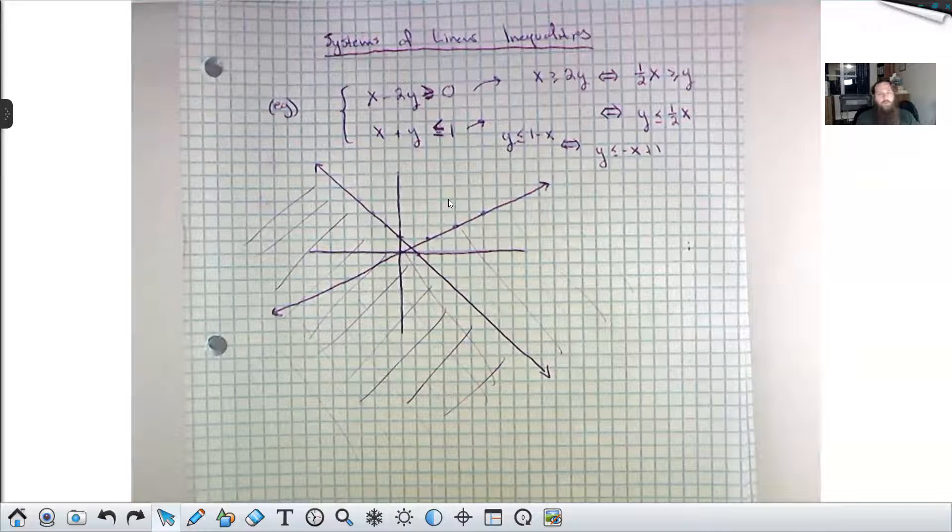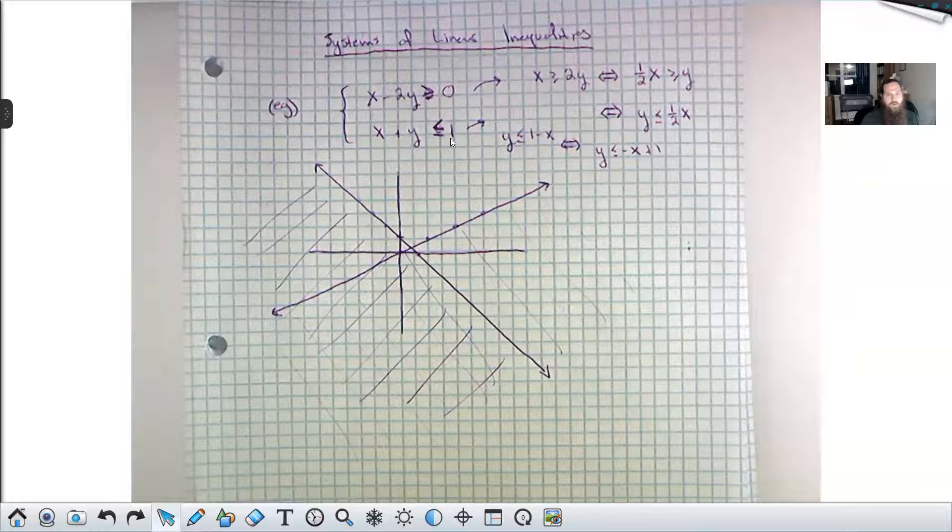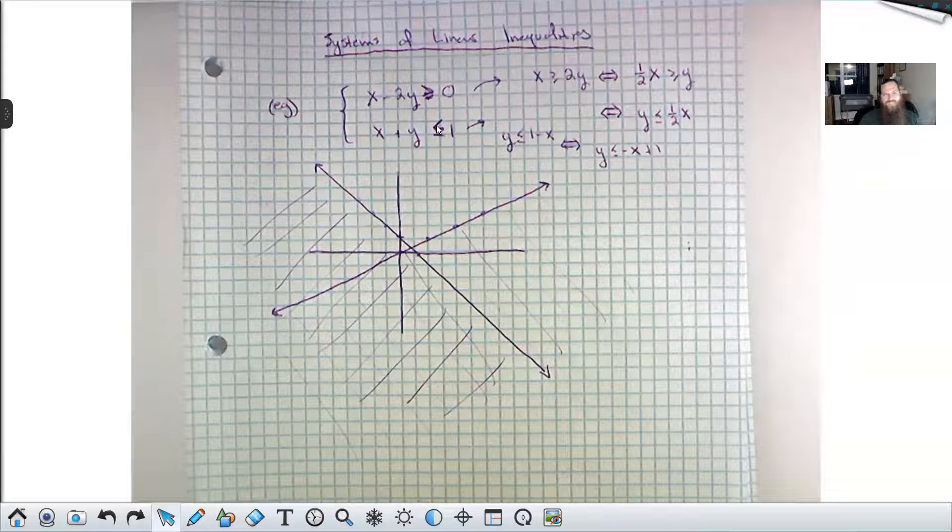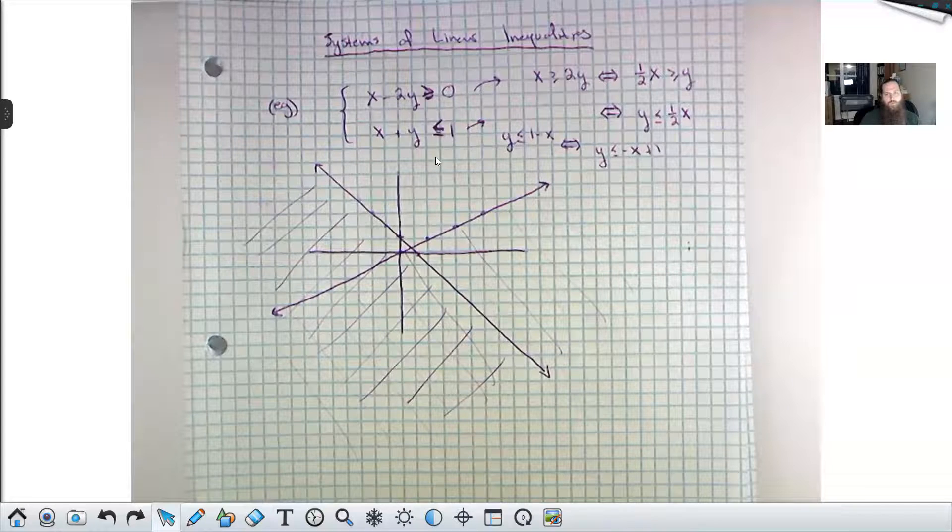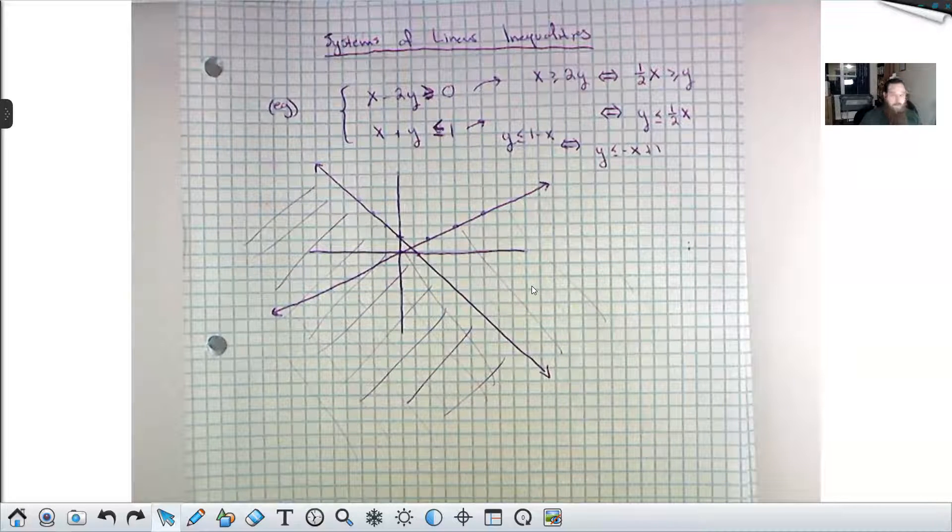You can have combinations of strictly greater than and weakly less than, strictly greater than and less than or equal to. And one line would be dotted, one line would be solid, but everything follows the same pattern.